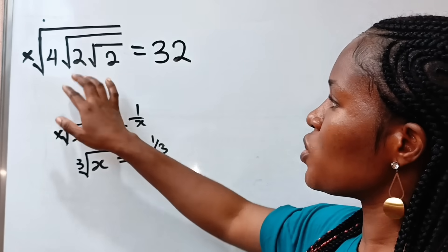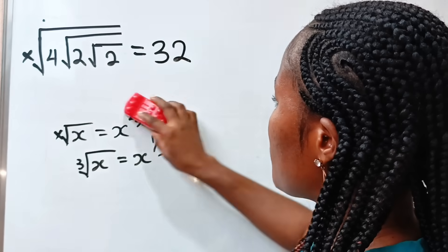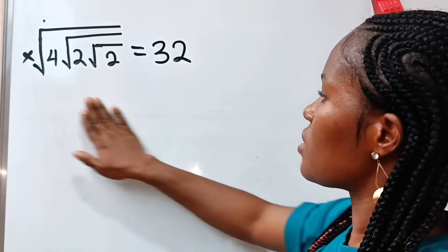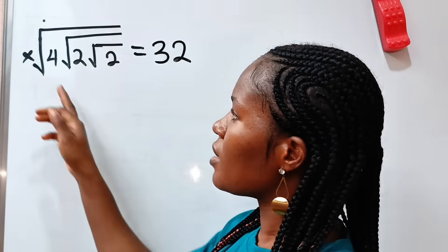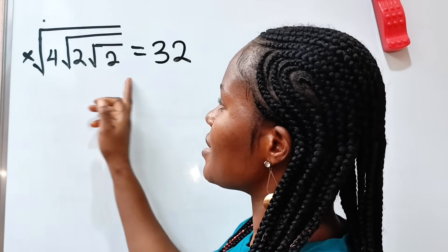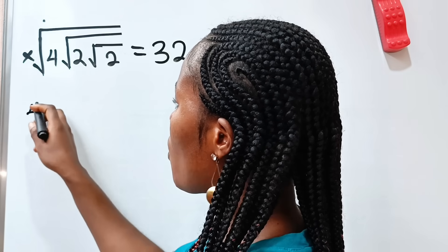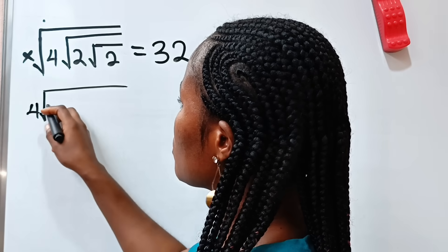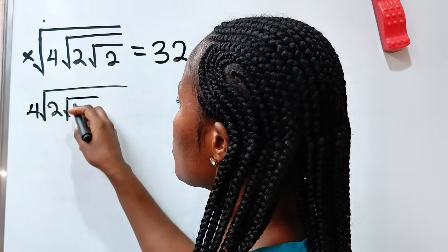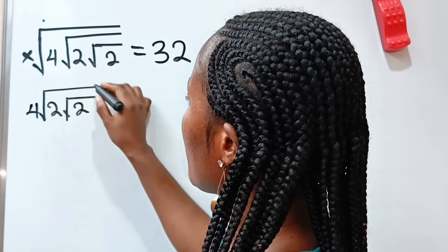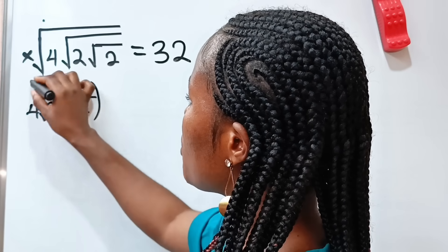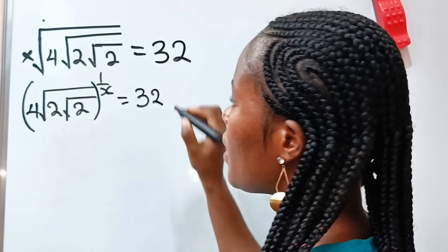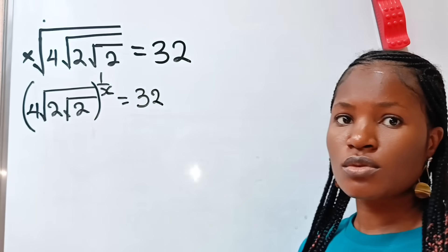Now let us try to use it to simplify this. So if we do that, we have 4 roots of 2 roots of 2, raised to the power of 1 over x, is equal to 32.